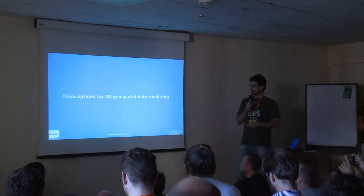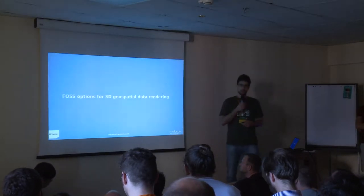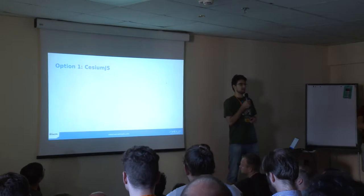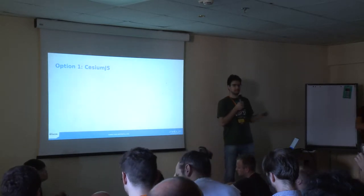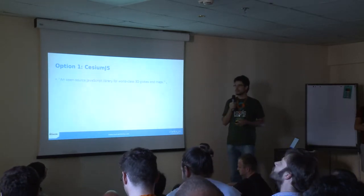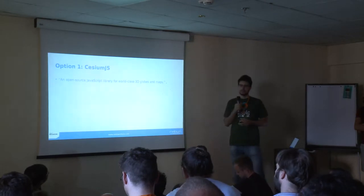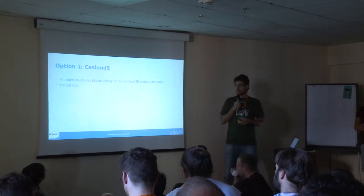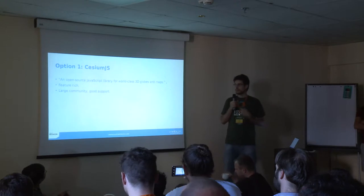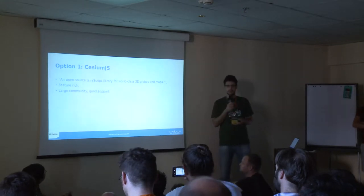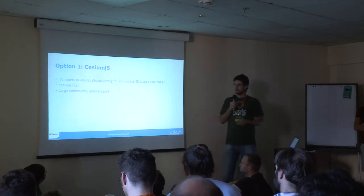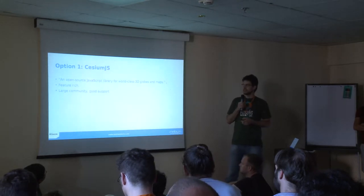The first option for 3D geospatial data rendering that probably comes to mind is Cesium.js. It's an open source JavaScript library for world-class 3D globes and maps — at least that's what their web page says. It's very feature-rich and has a very large community and quite good support. When I did the examples, I got very nice support on the forum and on GitHub. From that point of view, that was a pleasant experience.